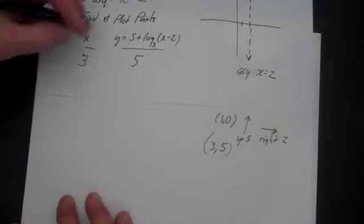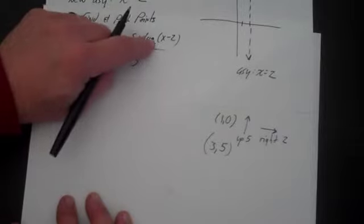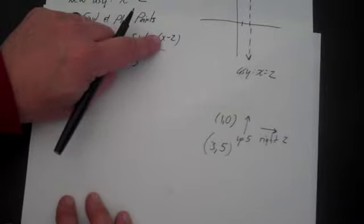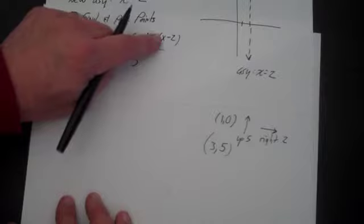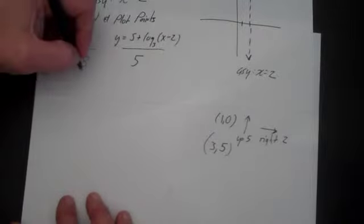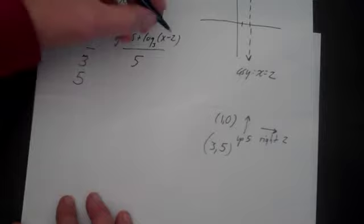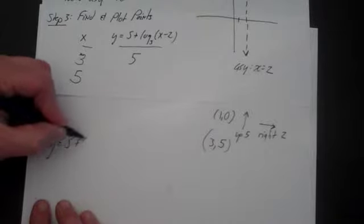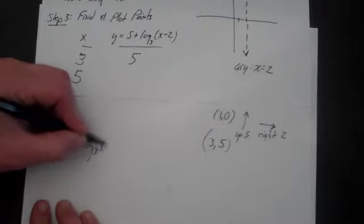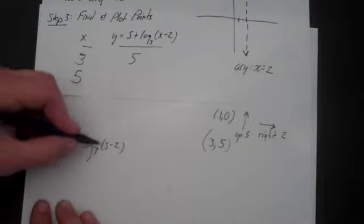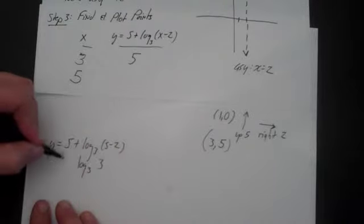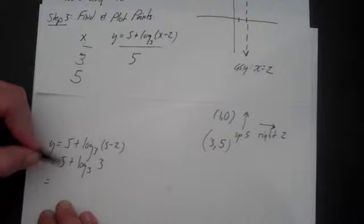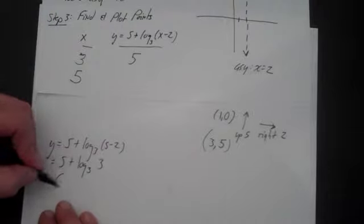And now we just need to figure out what other points to plug in. It's log base 3, so it would be better if I could plug in a point where we could do it in our heads. So if I get 3, so let's say that would be x equals 5. That's 5 minus 2 is log 3 of 3. So let's go ahead and plug that in. Let's plug in y equals 5 plus log base 3 of 5 minus 2. 5 minus 2 is 3, so that's log 3 of 3. Log 3 of 3 is simply 1, so that's 5 plus 1, which is 6.